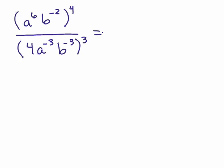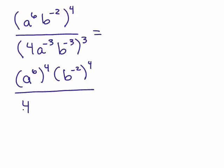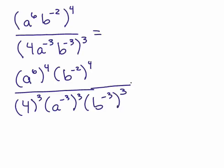There's a problem. Now, there are different ways to do this. What I would suggest is since you have something raised to a power that's positive especially, it might be easier to go ahead and just use the power of a product rule to begin with. Okay. So we have a to the 6th raised to the 4th power, b to the negative 2 raised to the 4th power, over 4 to the 3rd power, a to the negative 3 to the 3rd power.